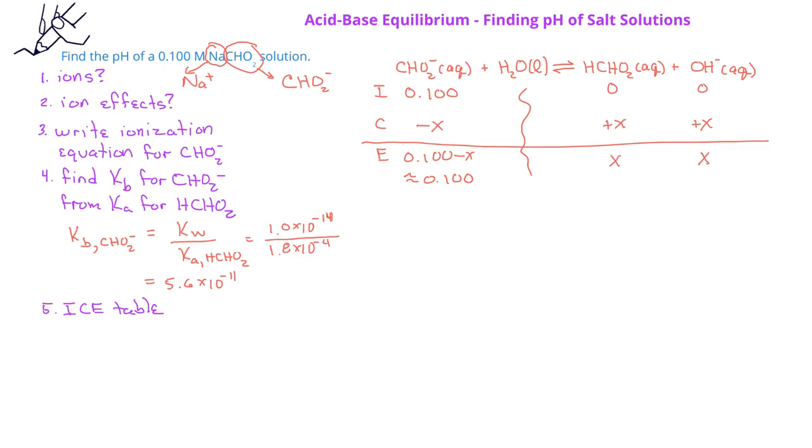Now we can write the base ionization constant expression for this ionization equation, which is HCHO2 times the concentration of hydroxide divided by the concentration of the formate ion. So 5.6 times 10 to the minus 11 equals X squared divided by 0.1. X squared equals 5.6 times 10 to the minus 12. And taking the square root, X equals 2.4 times 10 to the minus 6.